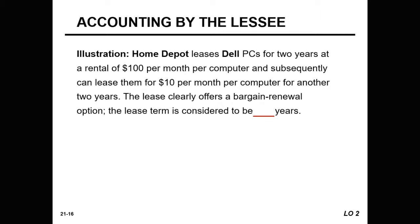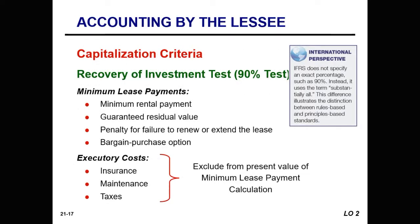For example, Home Depot leases Dell PCs for two years at $100 per month per computer, and subsequently can lease them for $10 per month per computer for another two years. The lease clearly offers a bargain renewal option, so the lease term is considered to be four years. The reason for the 90% recovery of investment test is that if the present value of the minimum lease payments is reasonably close to the market price of the asset, the asset is effectively being purchased. A major exception to the 75% and 90% rules is when the inception of the lease occurs during the last 25% of the asset's life — in that case, these tests should not be used.